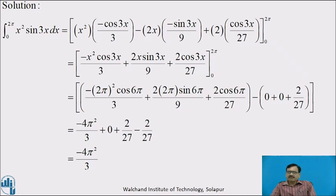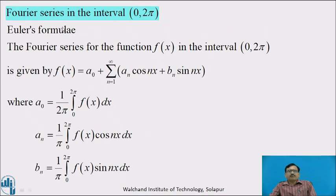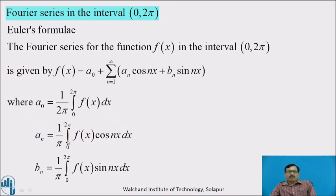I hope you have completed this. Now, first of all we will see the Fourier series in the interval 0 to 2π. We will see Euler's formula directly. The Fourier series for the function f(x) in the interval 0 to 2π is given by f(x) = a₀ + Σ(n=1 to ∞)(aₙcos nx + bₙsin nx), where a₀ = (1/2π)∫₀²π f(x) dx, aₙ = (1/π)∫₀²π f(x)cos nx dx, and bₙ = (1/π)∫₀²π f(x)sin nx dx.